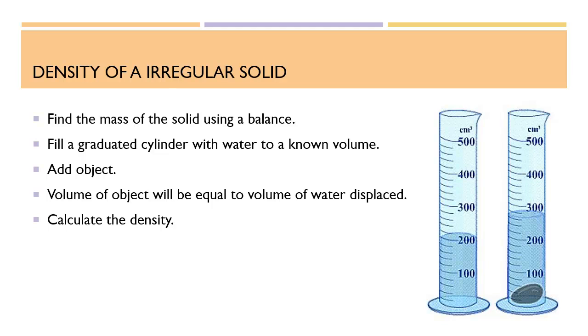An irregular solid doesn't have this, so we first find the mass using a balance, then we use water displacement. So we fill a graduated cylinder with a known volume, this one happens to go up to 200, we add the object, and the amount of water displaced is its volume.